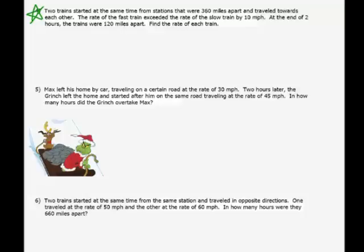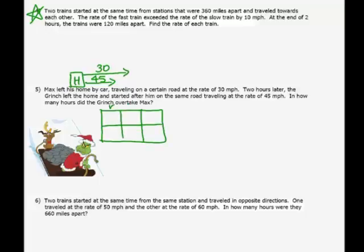He left his home by car, traveling on a certain road at 30 miles per hour. Two hours later, the Grinch left and started after him at 45 miles per hour. In how many hours did the Grinch overtake Max? So here they are at home, and Max leaves at a rate of 30 miles per hour. And the Grinch leaves after him at a rate of 45 miles per hour. I want to know when the Grinch meets up with him. So I'm going to make my table. I have Max and I have the Grinch with three columns: rate times time equals distance. I know that his rate is 30, his rate is 45. I don't know the number of hours. So if the Grinch's time is x, then Max has been traveling for x plus 2, because he's taken two hours less time. Max had a head start of two hours.